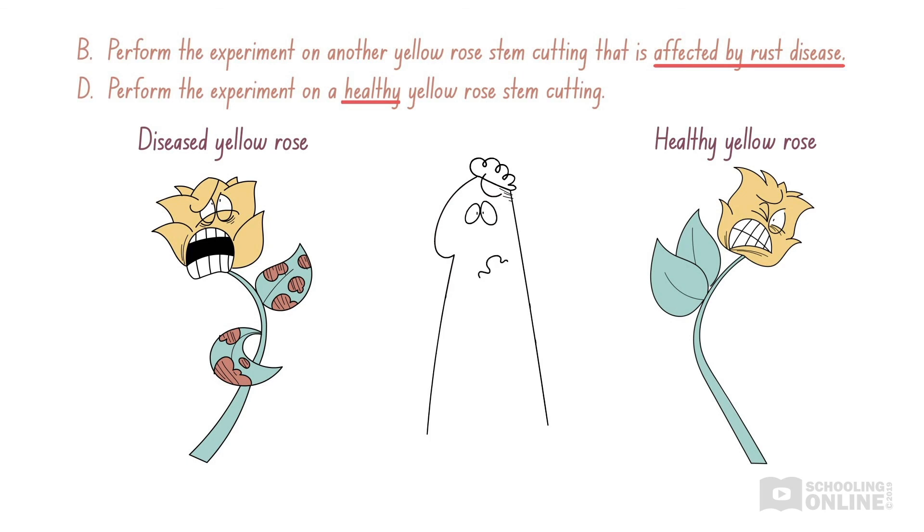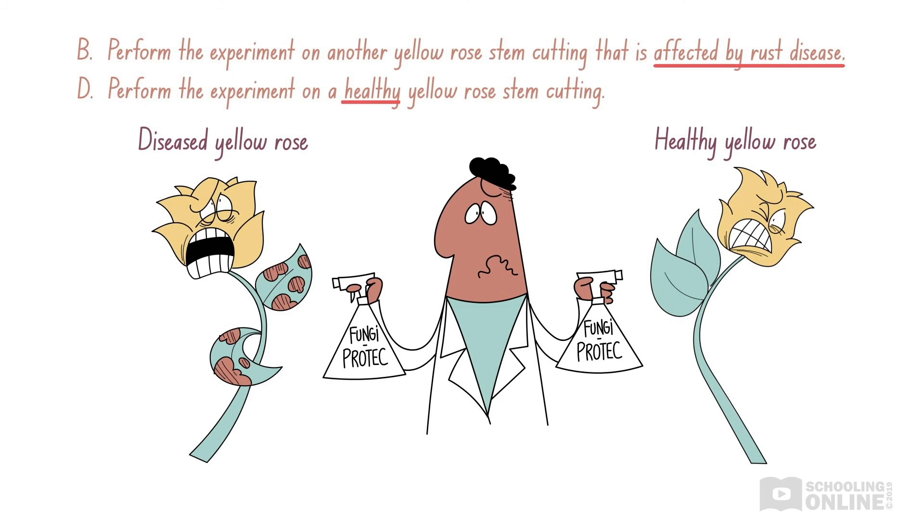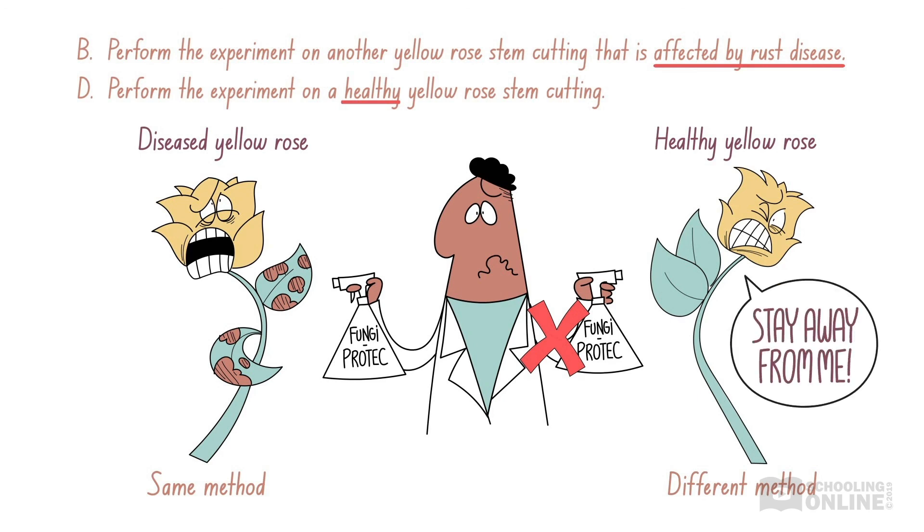Remember, we need to perform the same experimental method each time to ensure the reliability of the experiment. This includes using identical equipment and maintaining the same environmental conditions. Since we used a diseased yellow rose stem cutting in the original experiment, we need to do the same in a repeated trial. Furthermore, the fungicide will not serve any purpose in eliminating fungal disease if the plant is healthy in the first place. Therefore, option D is incorrect, making option B the correct answer.